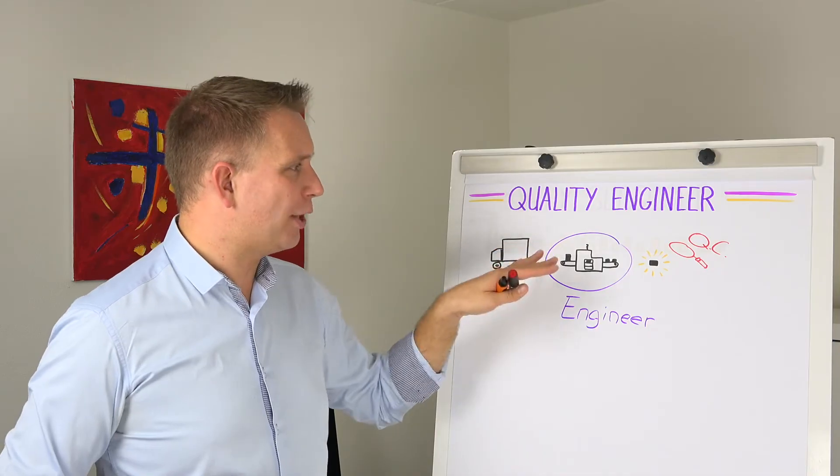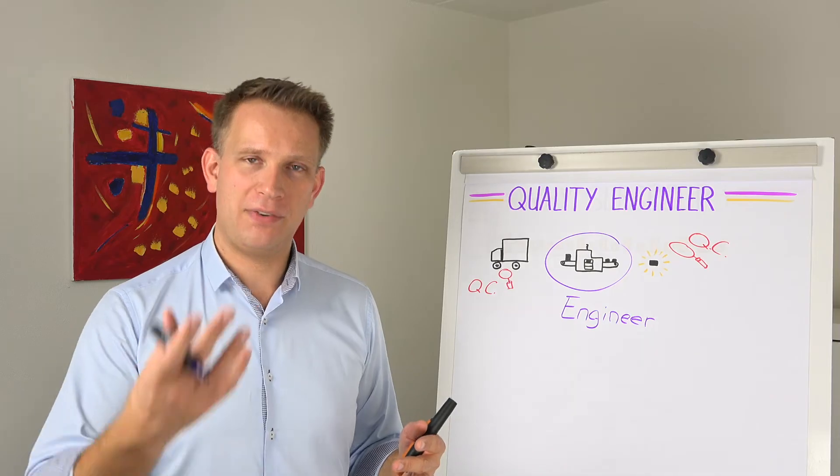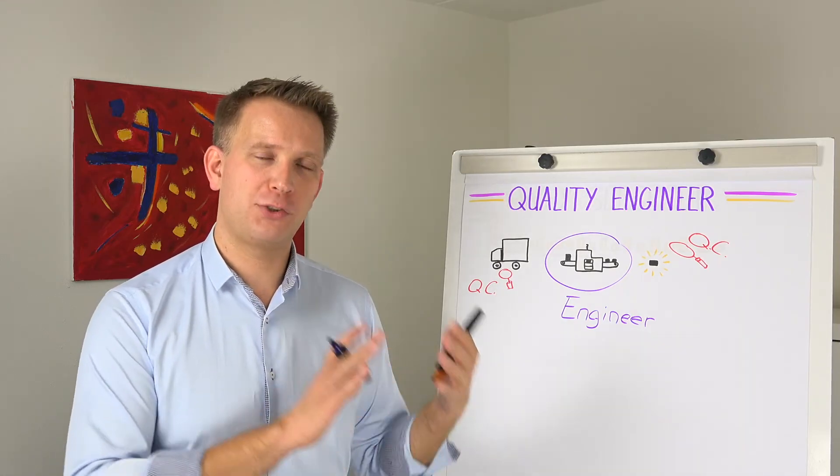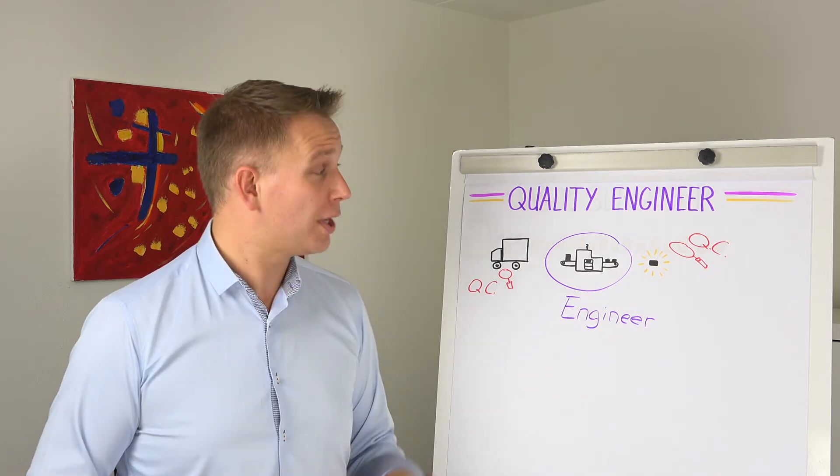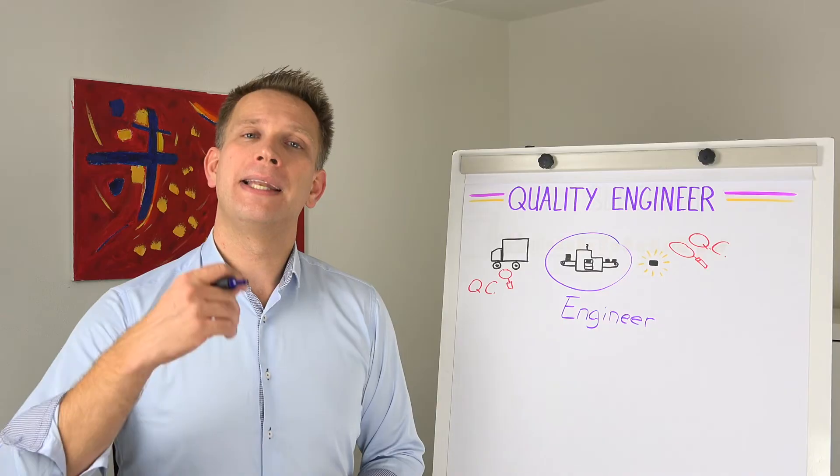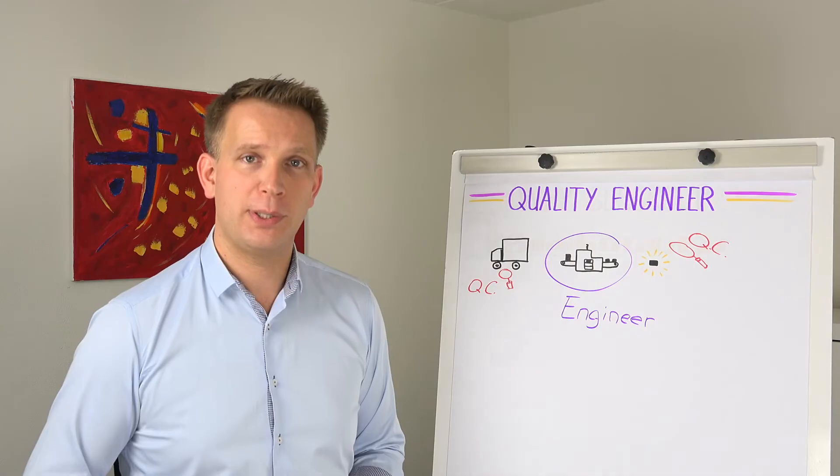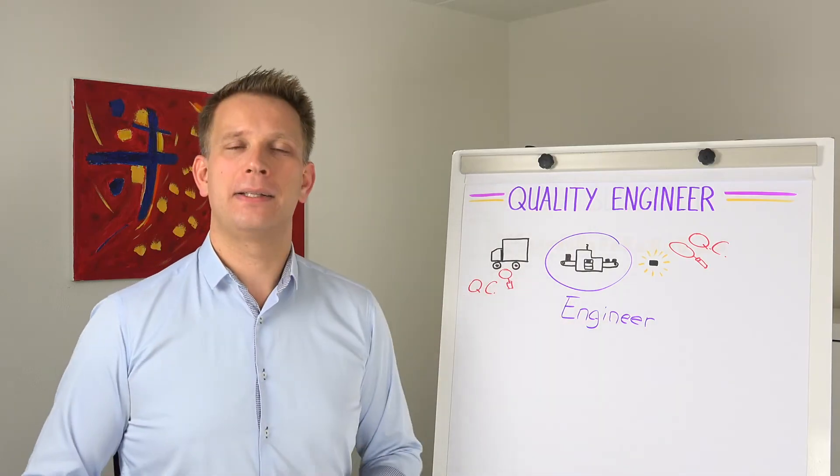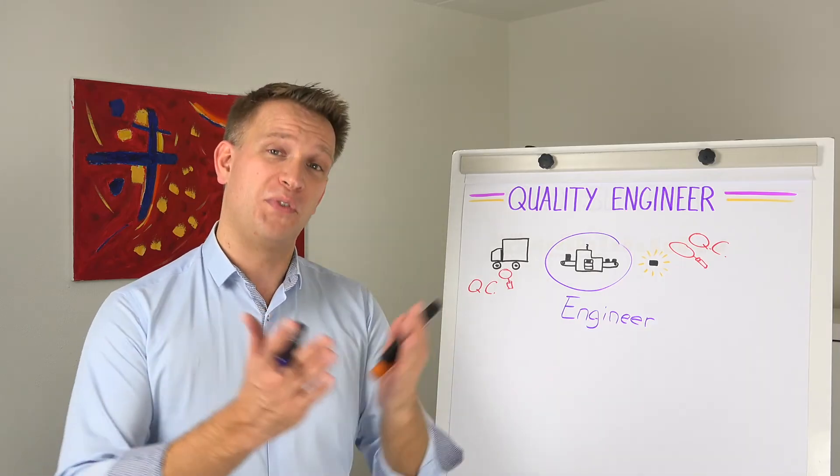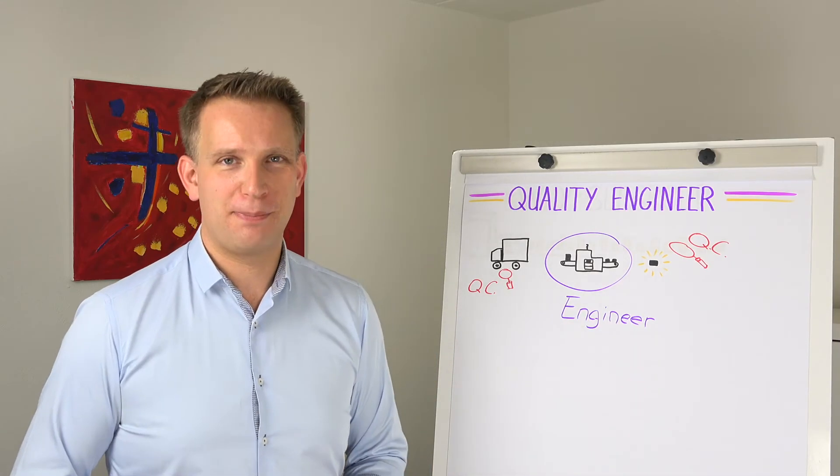A quality engineer will also be more concerned with waste and variation in the process instead of just defects. The traditional narrow quality focus is a good product, remove the defects, let's go. The quality engineers will be also concerned about the efficiency with which we do it and how to make our process behave in such a way that we don't generate waste to begin with, reduce the variation. All of the Six Sigma skills basically.